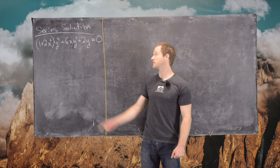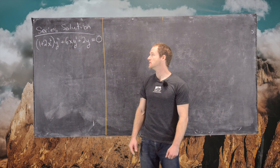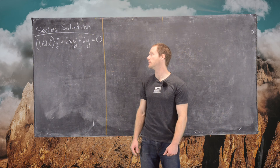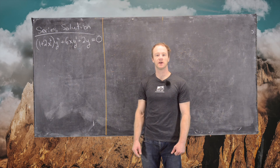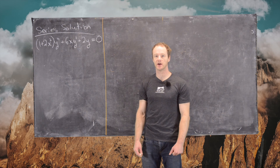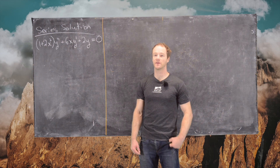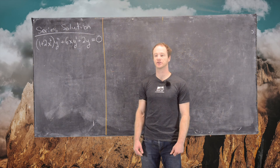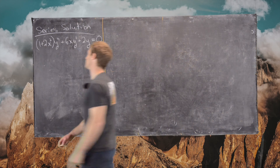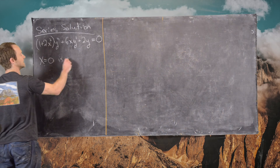In this video we're going to explore a series solution to the following second order linear differential equation: 1 plus 2x squared times y double prime, plus 6x times y prime, plus 2y equals 0. We can apply a theorem from a previous video to determine what the ordinary points are and what the interval of convergence will look like. First, notice that x equals 0 is an ordinary point.